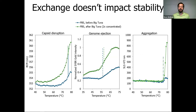When we compare capsid disruption, genome ejection, and aggregation metrics of the starting material and the process control after buffer exchange and concentration, we see two things. First, the green lines tend to be higher than the blue lines simply because there's more material — higher SYBR Gold intensity, more aggregation, and a higher SLS signal, because more particles scatter more light. Looking at the actual metrics, however, there is essentially no difference between PBS before and after Big Tuna. So buffer exchange and concentration don't really impact stability at all.